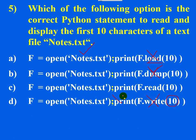Option C uses the read function, which is used to read data from a text file. If you pass the argument 10, the first 10 characters will be read from the text file.